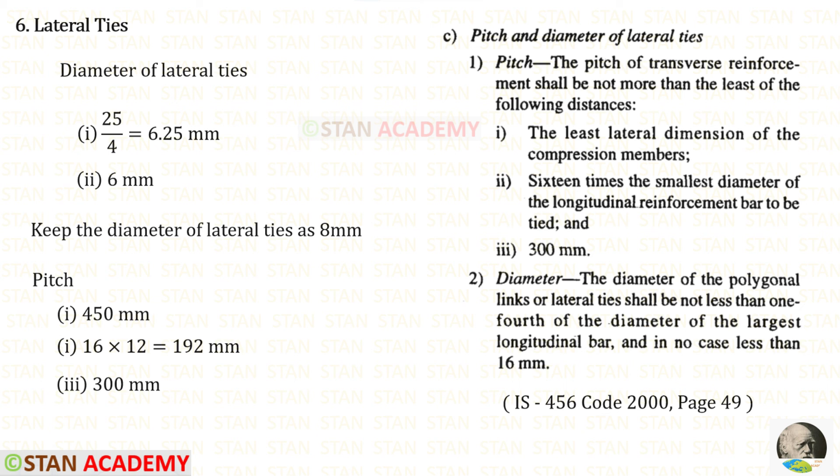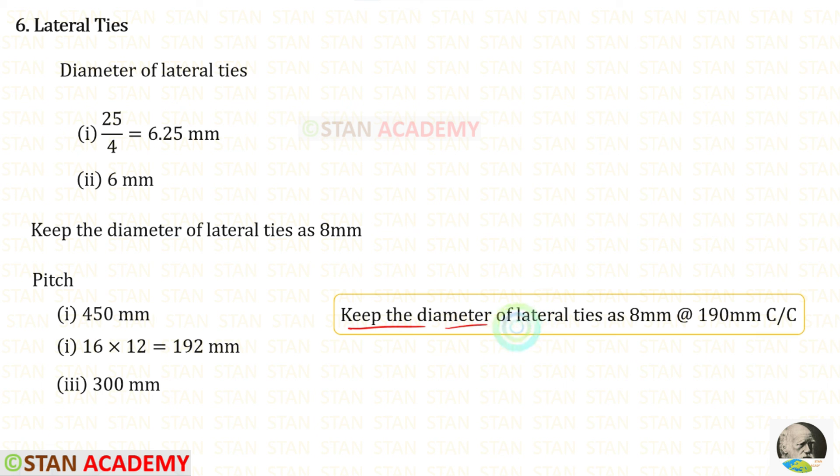Now we have to find the spacing. That is the pitch. The pitch of transverse reinforcement shall be not more than the least of the following distances. First, the least lateral dimension of the compression members. The size of the column is 450 by 600. The least is 450. 16 times the smallest diameter of the longitudinal reinforcement bar to be tied. Our smallest diameter longitudinal bar is 12 mm. 16 times 12 we will get 192 mm. The third one is 300 mm. From these three we have to select the minimum one. That is 192 mm. We can round this value as 190. So let us keep the diameter of the lateral ties as 8 mm and with the pitch of 190 mm.